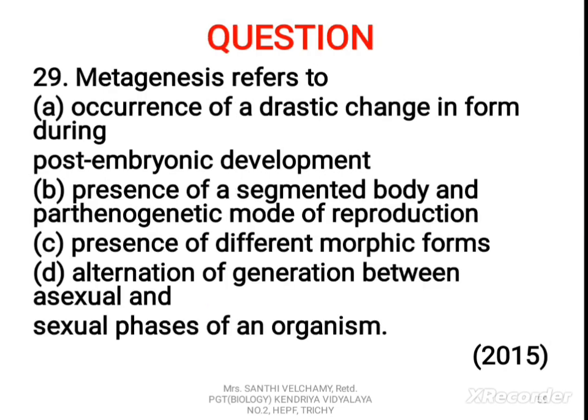29th question: metagenesis refers to A) occurrence of a drastic change in form during post-embryonic development, B) presence of segmented body and parthenogenetic mode of reproduction, C) presence of different morphic forms, D) alternation of generation between asexual and sexual phases of an organism. The correct answer is D. Alternation of generation between asexual and sexual phases is called metagenesis. For example, in Obelia — a coelenterate — polyps reproduce asexually and medusae are produced sexually.